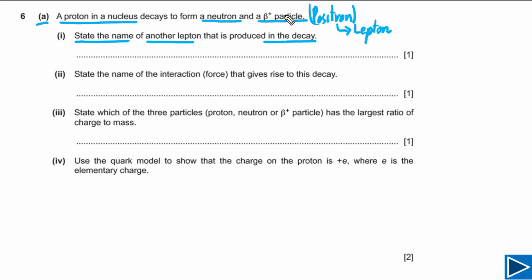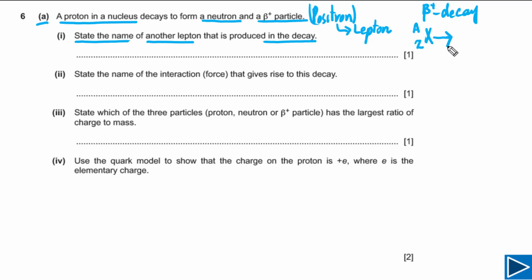Since a beta plus particle is emitted, this is beta plus decay. If a beta plus particle is emitted it means this is beta plus decay; if an electron is emitted it means this is beta minus decay. Let's say we have one nucleus X with atomic number Z, and this nucleus decays to another nucleus by beta plus decay. So this is our beta plus particle, which has charge plus one and mass number zero.